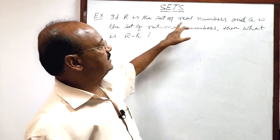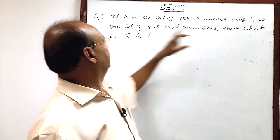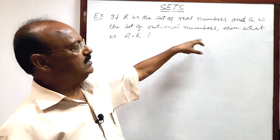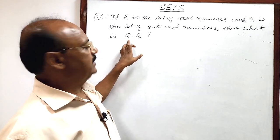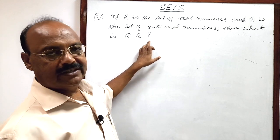Here question is if R is the set of real numbers and Q is the set of rational numbers, then what is set R minus set Q.